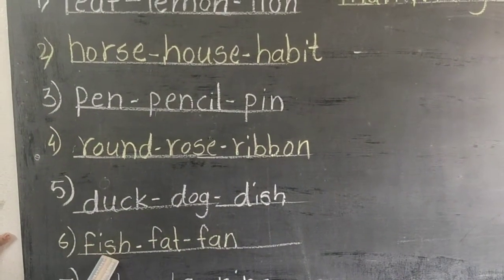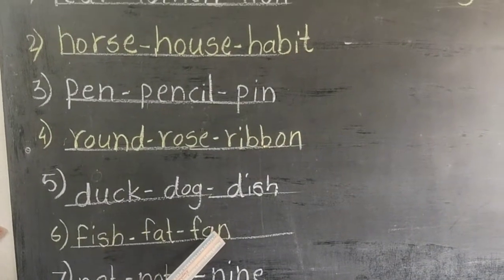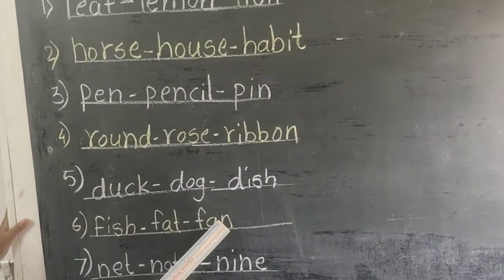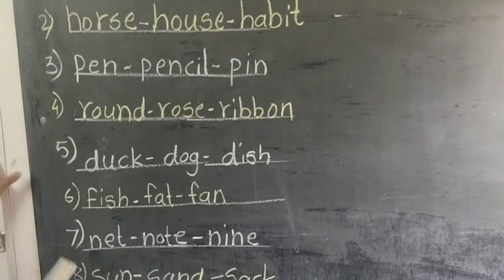Six, fish, fat, fan. Fish means masa, fat means jar, fat means pankha.